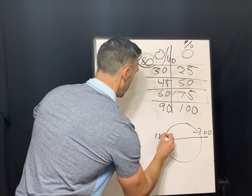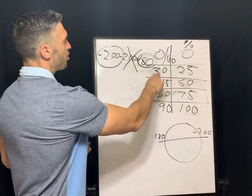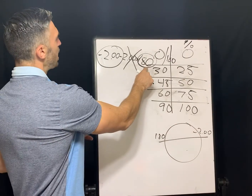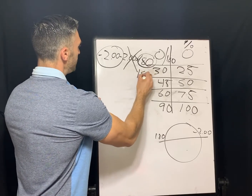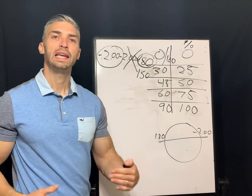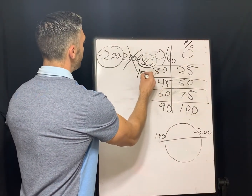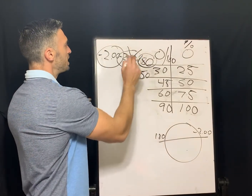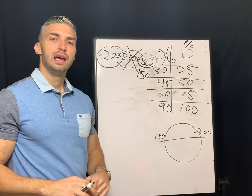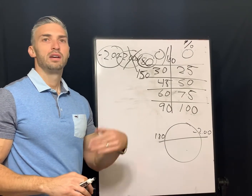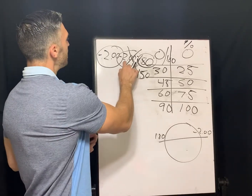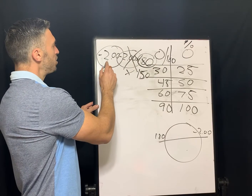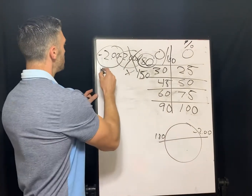Then 30 degrees away from the prescribed axis, 25% of the cylinder is present. So 30 degrees away from axis 180 we would have axis 150. Now 25% of the cylinder is present — the cylinder in the prescription is negative 2, and 25% of negative 2 is negative 0.50. So the power along the 150 axis is negative 2 plus negative 0.50, which gives us negative 2.50.